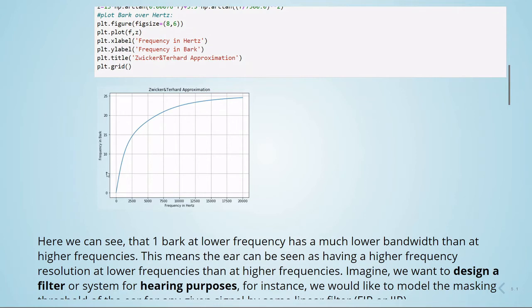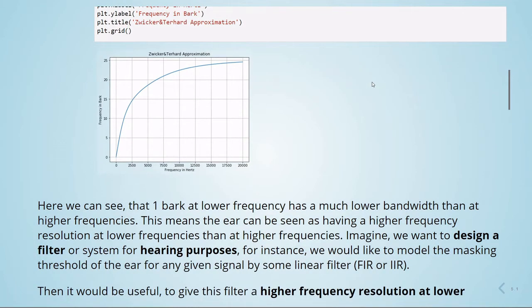If we take one bark in the lower frequencies, the bandwidth is much higher than if we take one bark in the higher frequencies. This means the ear can be seen as having a higher frequency resolution at lower frequencies than at higher frequencies.